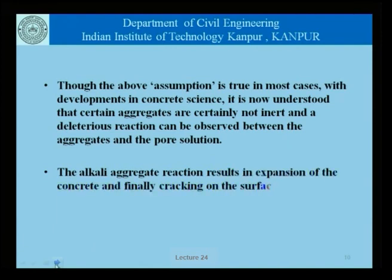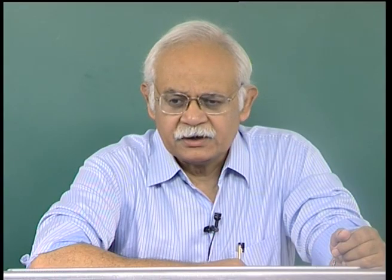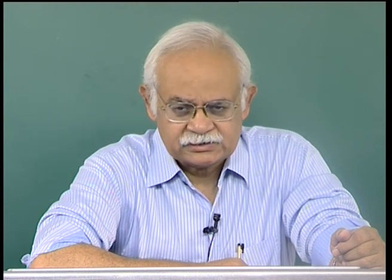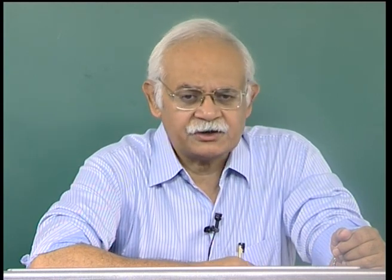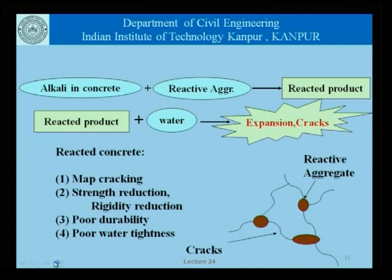The alkali aggregate reaction results in the expansion of concrete and finally cracking on the surface. Once alkali aggregate reaction occurs, the changes that happen in the concrete cause it to expand, and this expansion results in cracking which appears at the surface. This picture shows a representation of what really happens: there is alkali in the concrete, and if it occurs in combination with reactive aggregates, some reaction products are formed.